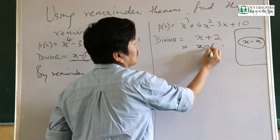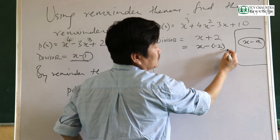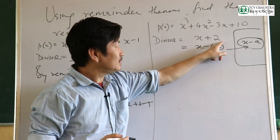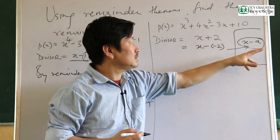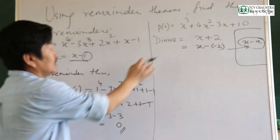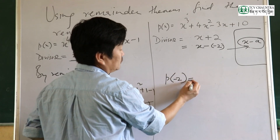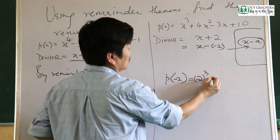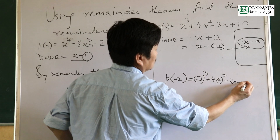The divisor is x minus negative 2, so a equals negative 2. By remainder theorem, we compute p of negative 2: negative 2 whole cubed plus 4 into negative 2 squared plus 3 into negative 2 plus 10.